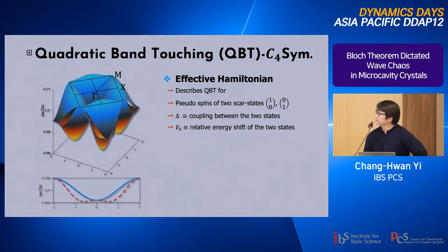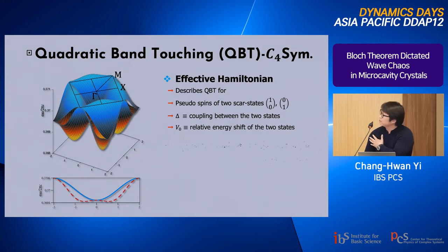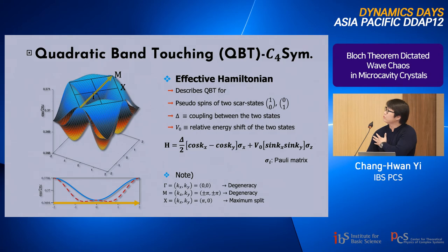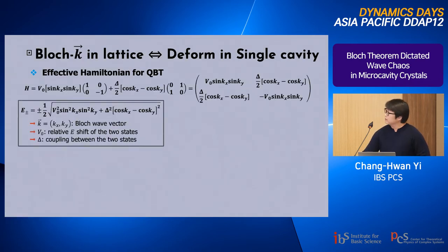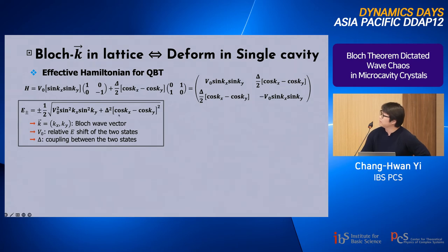We can describe the quadratic band touching based on the C4 symmetry of the cavity boundaries using an effective Hamiltonian, which describes the two pseudo-spin scar states. The main ingredients of this effective Hamiltonian are the coupling delta between the two states and the relative energy shift. The explicit form of the effective Hamiltonian shows that when kx and ky equal zero — the gamma point — the energy splitting vanishes.